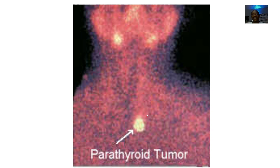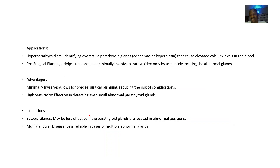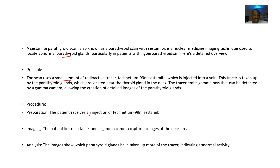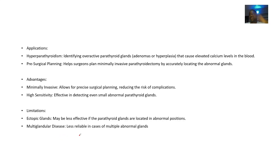When you scan the person, the parathyroid glands will be highlighted. It highlights the whole thyroid area, but you can observe the parathyroid gland better. The procedure is: inject the Technetium-99m sestamibi, the patient lies down, you take the image, and the parathyroid gland will be highlighted for better observation.